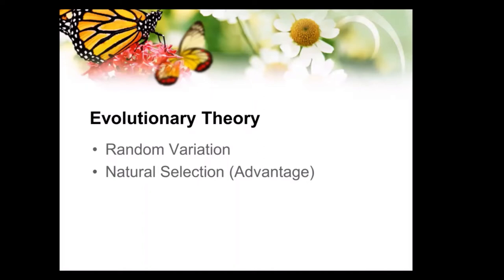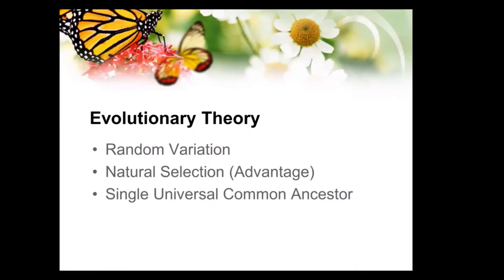The third and most controversial part of evolutionary theory is single universal common ancestry — that everything occurred from one and developed from there. That's the one that's hardest for me to accept. There are just too many changes needed to do that. Let me give you an example of how this works.